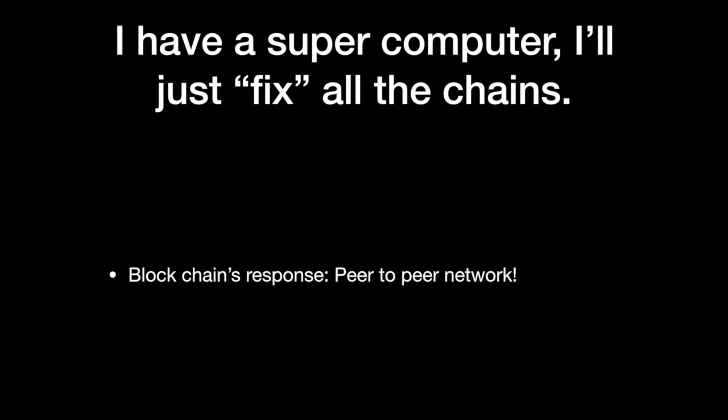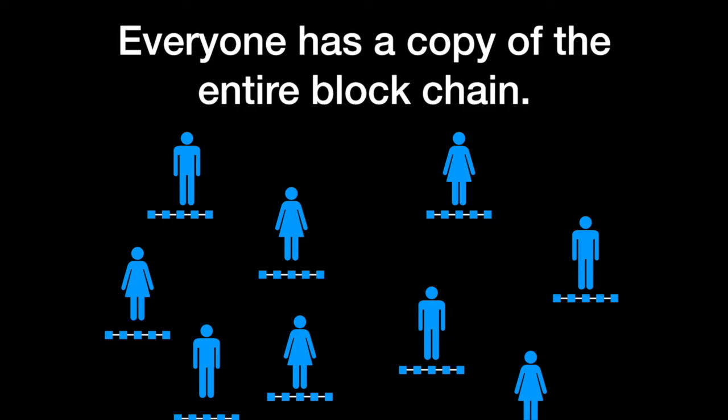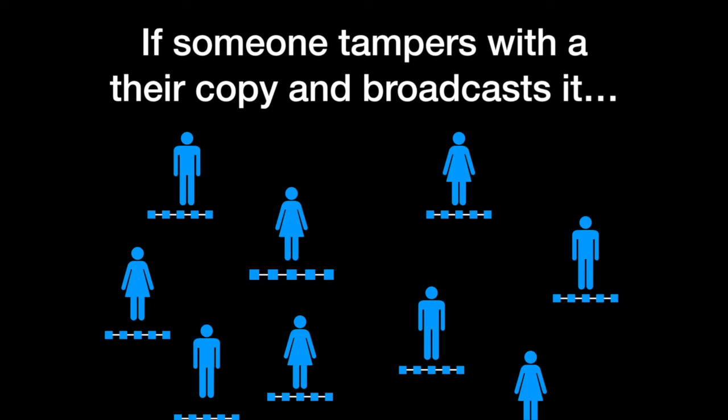This is where blockchain's distributed network comes in. Blockchain is built on a peer-to-peer network, so everyone has a copy of the entire blockchain. For example, if someone manages to change data in a block on their blockchain, fix the chains and rebuild the block. As you can see here, this hacker has managed to rebuild the blocks in her own blockchain. Now she tries to broadcast it. All the other nodes on the entire network realizes that this is different from their own blockchain, and so they reject this blockchain.